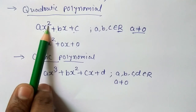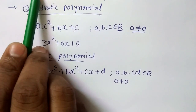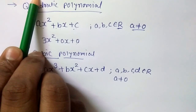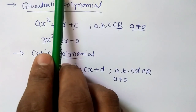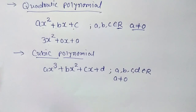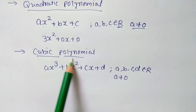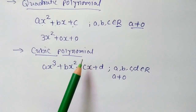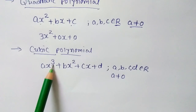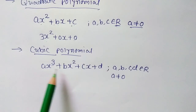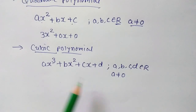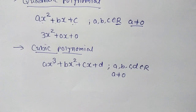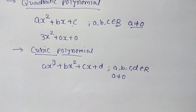So, if the highest degree is 3, it is a cubic polynomial; if the degree is 2, it is a quadratic polynomial; and if the highest degree is 1, it is a linear polynomial — whose graph is always a straight line. The word 'polynomial' itself comes from 'poly,' meaning many, and 'nominal,' meaning term — so it has many terms. If the degree is greater than 3, such as 4, 5, or 6, we simply call it a polynomial. I hope you are clear with these basic terms of the polynomial.